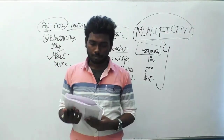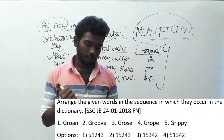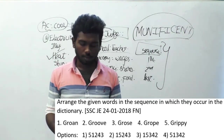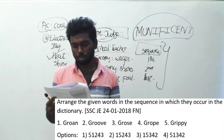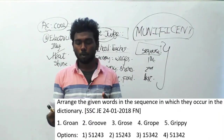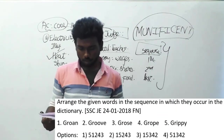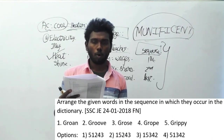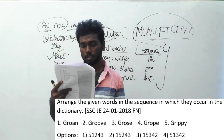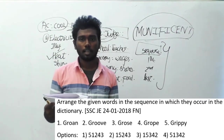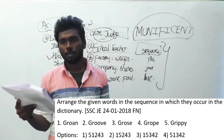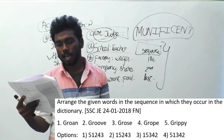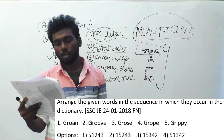Let's move on to question 165. Arrange the given words in the sequence in which they occur in the dictionary. This belongs to SSC JE, 24th January 2018, forenoon session. The five words are: grown, grew, grows, grow, grippy. Arrange in dictionary order — the answer is option A: 5, 1, 2, 4, 3.